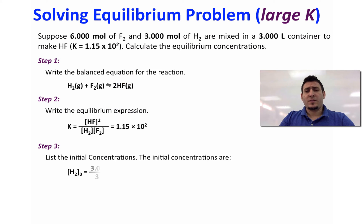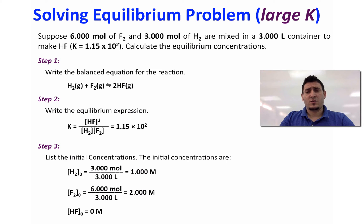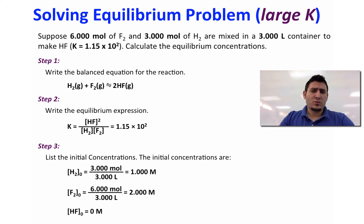In step 3, list the initial concentrations. We find the concentrations of hydrogen and fluorine by dividing the number of moles by the volume. So we have 1 M of hydrogen, 2 M of fluorine, and at the beginning we don't have HF, so its concentration is 0.